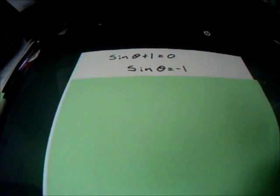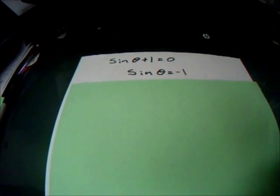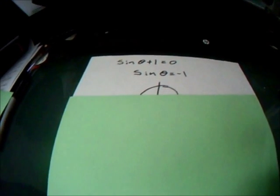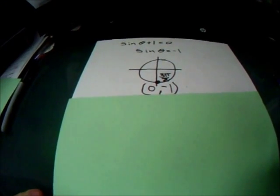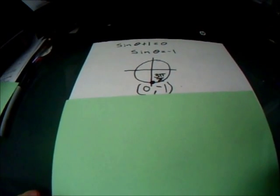So sine theta is equal to negative 1. Now, we need to find where the y value on the unit circle is negative 1. There's only one place for that, and that is at the bottom of the unit circle where x is 0 and y is negative 1. And that value happens to be 3 pi over 2.